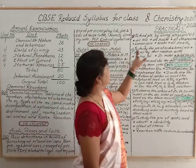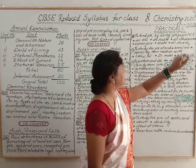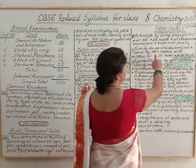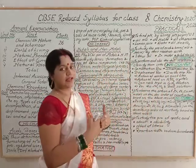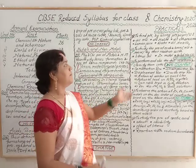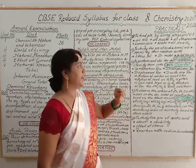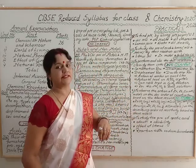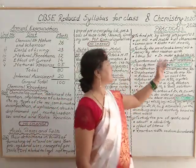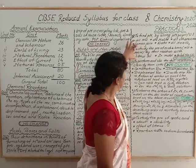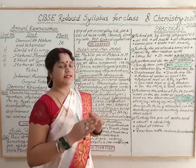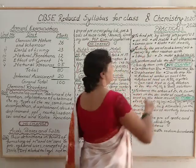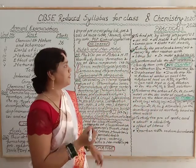Practical 2: To study the properties of acids and bases (HCl and NaOH) by their reaction — first testing with litmus paper, then reacting with zinc metal, then reacting with solid sodium carbonate. This practical has NOT been deleted; you need to study and perform this practical.